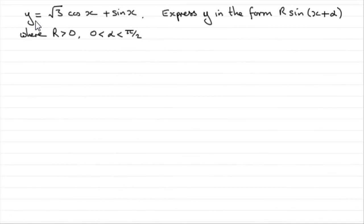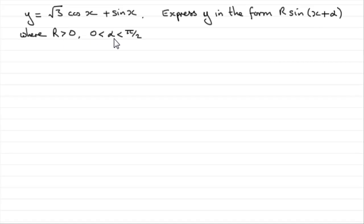Hi. What we've got to do is we've got y equals root 3 cos x plus sine x, and we've got to express y in the form r sine of x plus alpha, where r is greater than 0 and alpha is an angle in radians between 0 and pi over 2. So how are we going to do this?